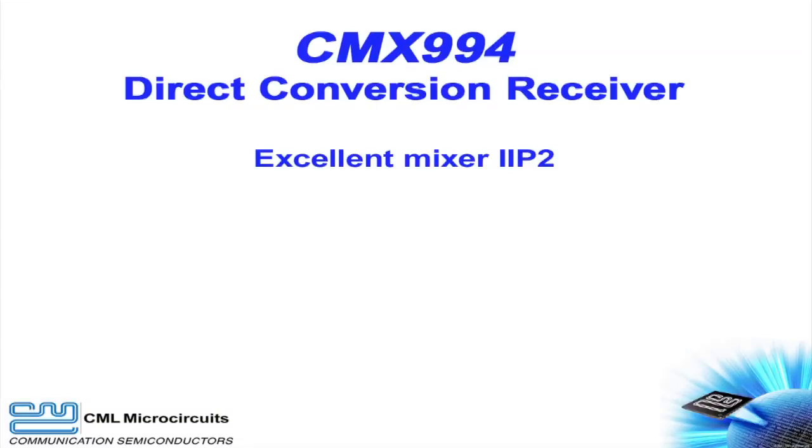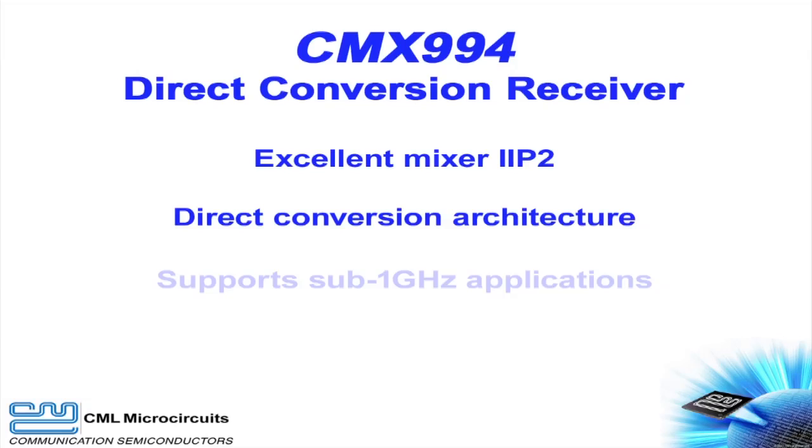As you know, the CMX994 offers many compelling advantages. Previous direct conversion receivers suffered from significant DC offset problems. The outstanding second-order intercept of the CMX994 helps make that problem a thing of the past. Its direct conversion architecture eliminates image responses and maximizes integration. Its wide frequency range supports sub-1 GHz applications.